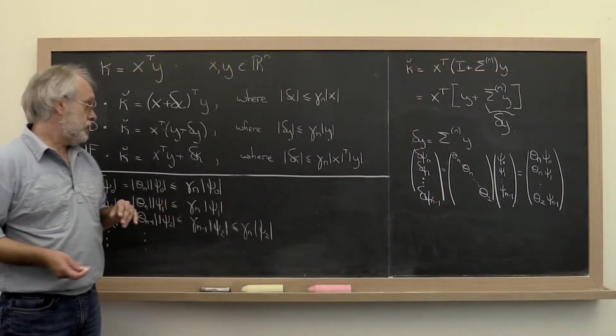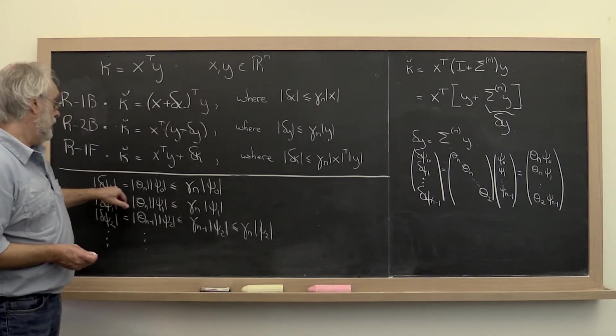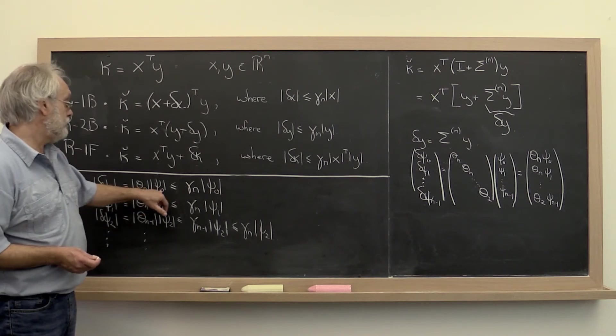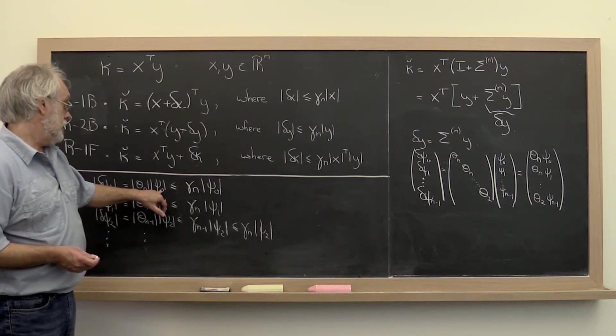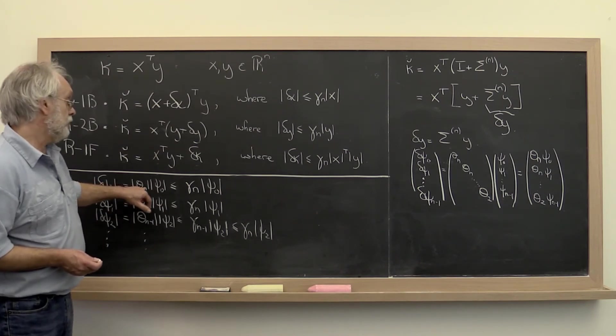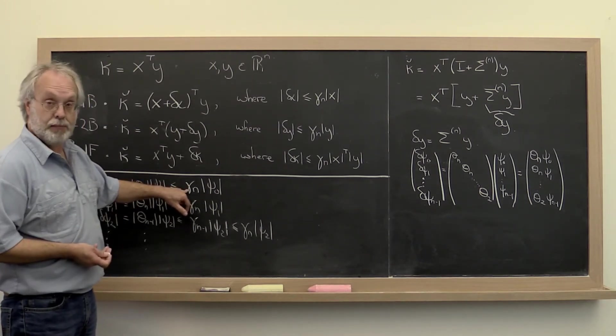So what we notice now is that delta psi 0 in absolute value is just equal to the absolute value of theta n times the absolute value of psi 0.